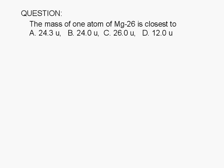The mass of one atom of magnesium-26 is closest to: A, 24.3u, B, 24.0u, C, 26.0u, or D, 12.0u.